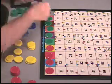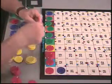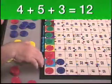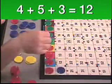Now we're going to add three ones: one, two, three. Now we have four plus five plus three equals 12.